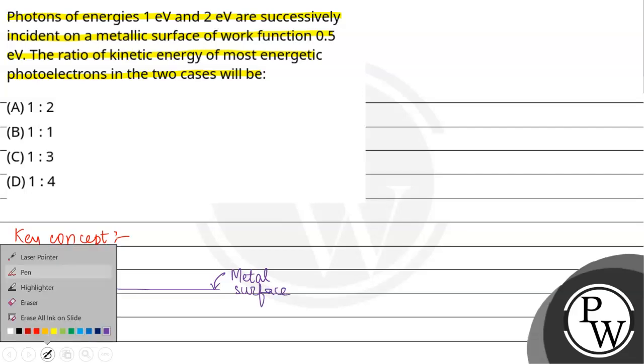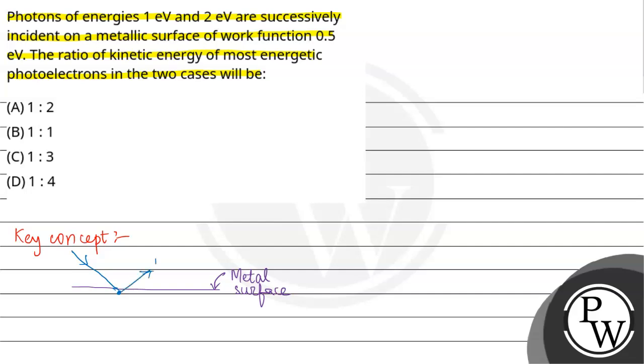And here is incident light. Here are free electrons. When the light is incident, it will give the maximum kinetic energy. This is a free electron.